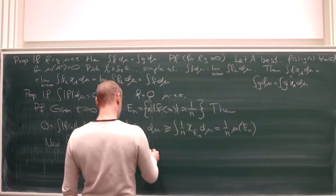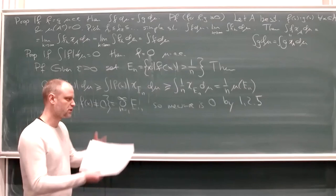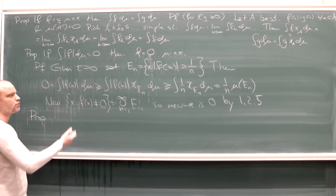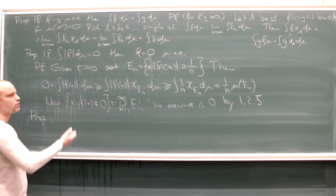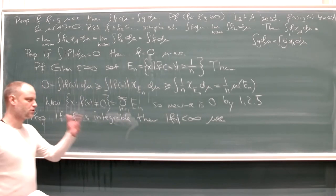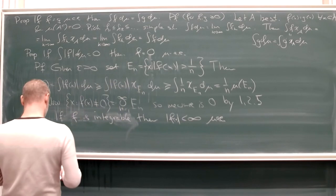Last statement: if f is integrable (the integral is finite), then the function must be finite almost everywhere. Proof for non-negative f: let E = {x : f(x) = ∞}. For any finite n, n·1_E ≤ f, so n·mu(E) ≤ integral f d mu < ∞. This must hold for all n, which is only possible if mu(E) = 0.